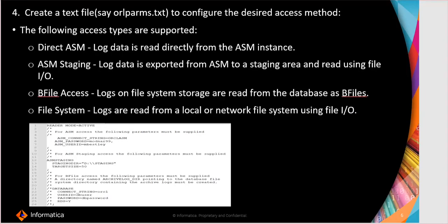Next, we need to create a text file named orparms.txt which includes the access types you are going to use. It can be direct ASM, or ASM staging, or B-file access, or on file system.